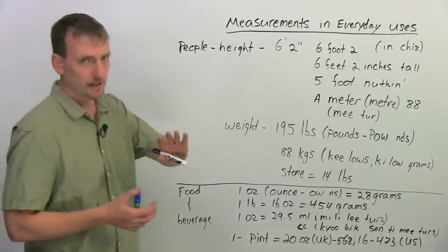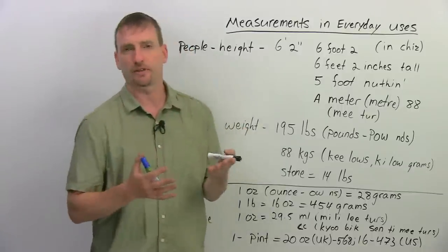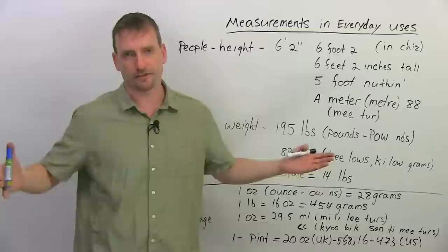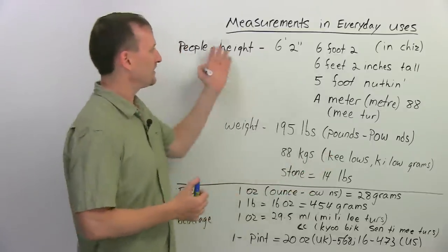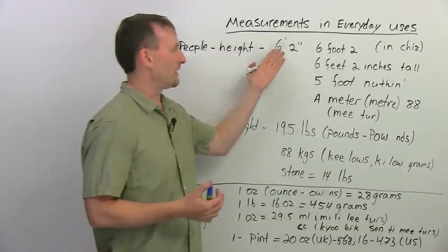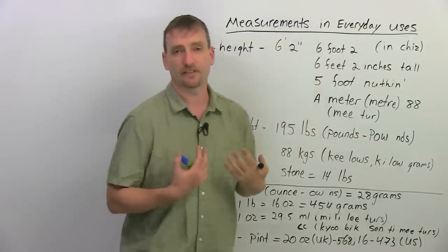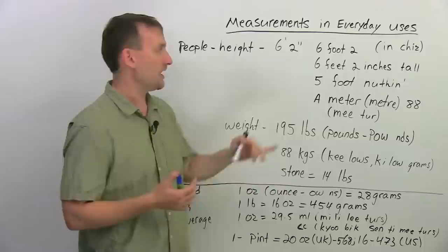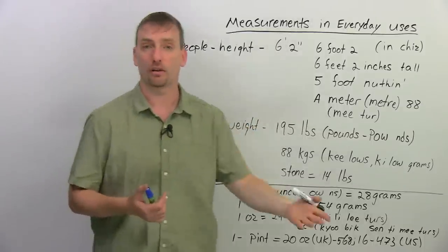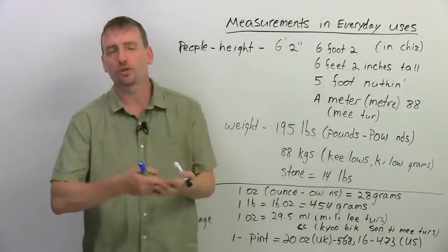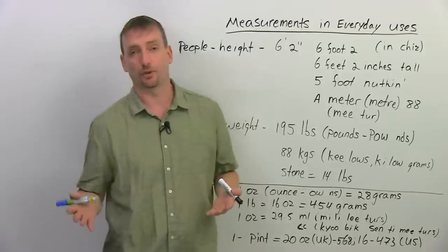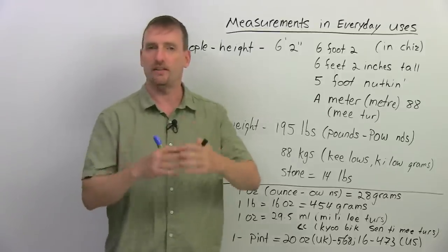So, we're going to start with people, and basically, when we talk about measurements, we're going to talk about a person's height and a person's weight. So, let's talk about height. I'm going to use the measure six foot two. For example, I am six feet, two inches tall. So, if somebody asks me, how tall are you, most commonly, I will say, I'm six two. Everybody understands.